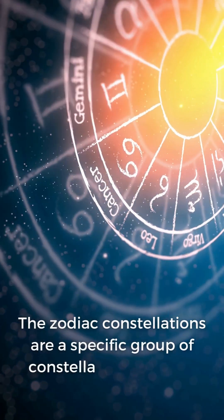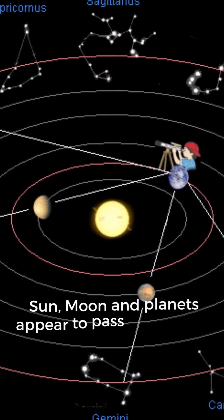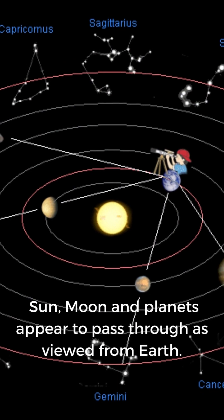The zodiac constellations are a specific group of constellations that the Sun, Moon, and planets appear to pass through as viewed from Earth.